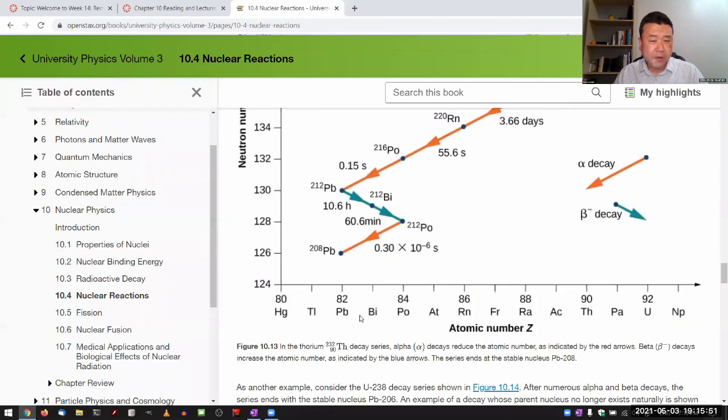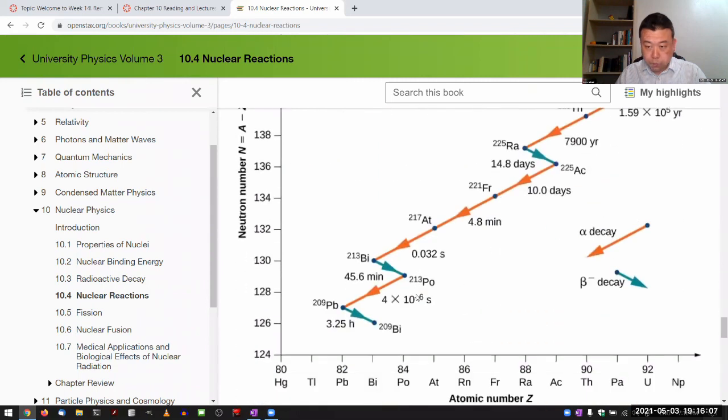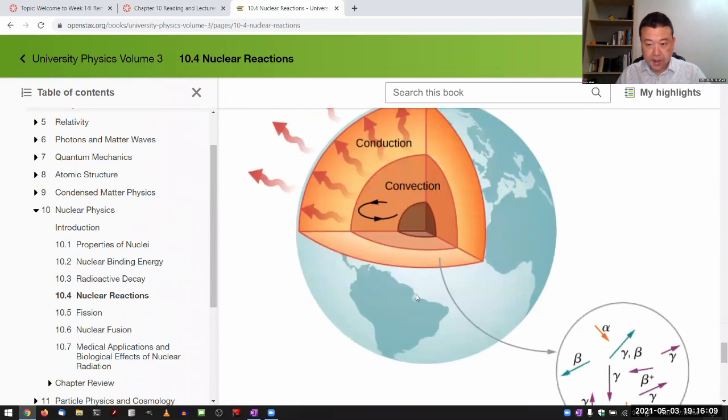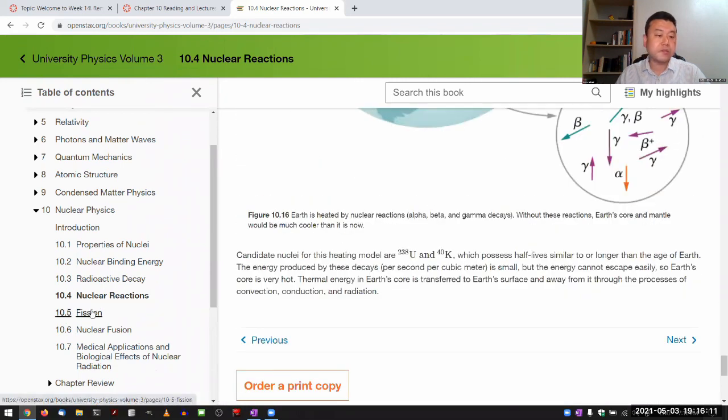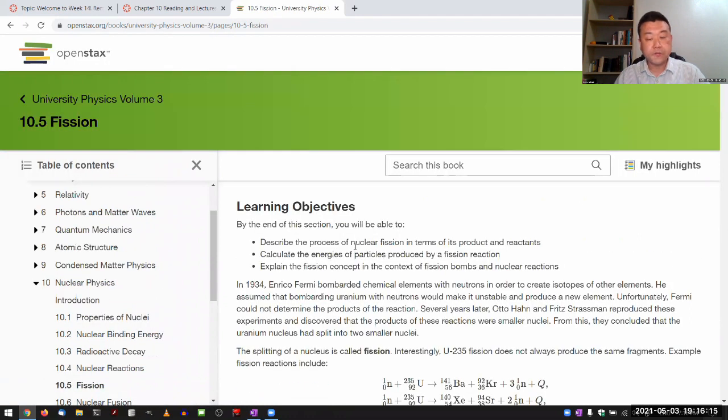All the elements heavier than lead are unstable, and they will all have a chain to decay into either lead or something lighter than lead over a long enough period of time. Where the lecture ends is with the discussion of fission.